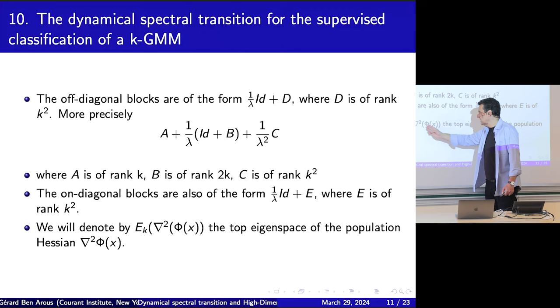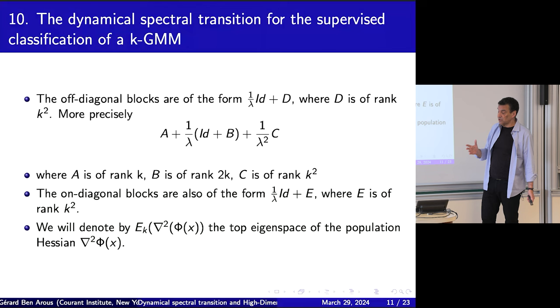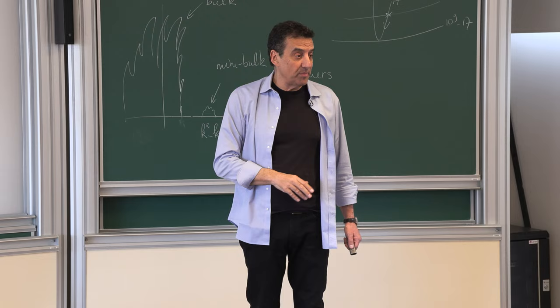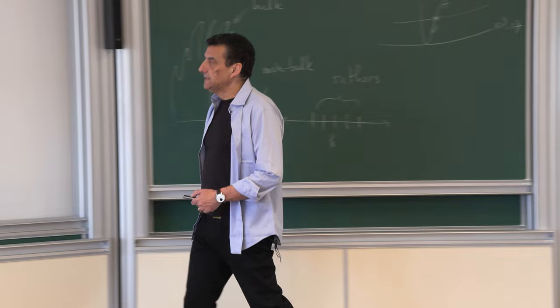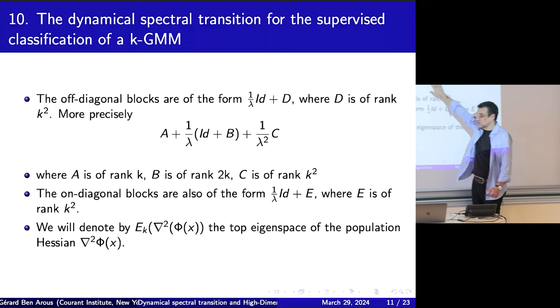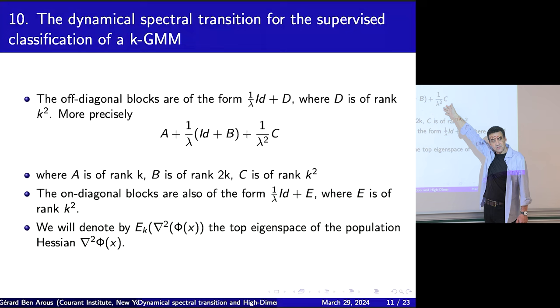I define E_K(x) — the top eigenspace of the population Hessian — as the top K eigenspace: the space where the dynamics will essentially happen. The transition from the structure of this matrix to the structure of the spectrum is the hard random matrix part. Computing the derivatives to get the matrix structure is just calculus; but going from matrix structure to spectral structure requires serious random matrix theory.